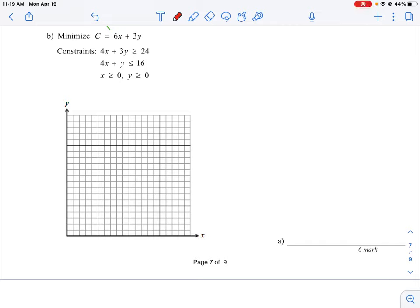Let's take a look at question B where we're looking to minimize the cost equation. We're given different constraints here. We have 4x + 3y ≥ 24, 4x + y ≤ 16, and we're also constraining ourselves to positive numbers for the x and y axes.